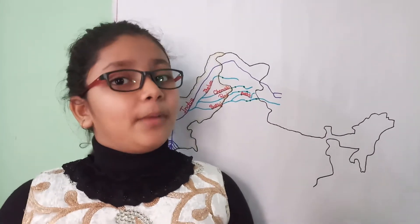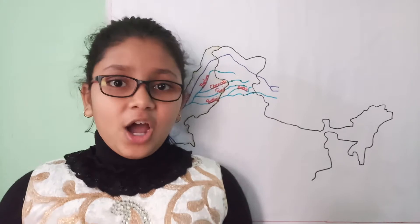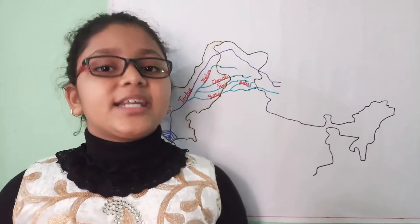So what is a multi-purpose river valley project? It is constructed to fulfill the requirements of irrigation for agriculture, electricity for industries, and flood control.